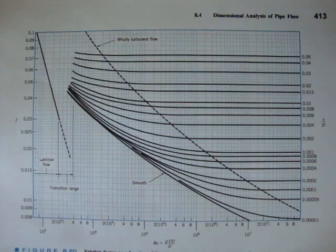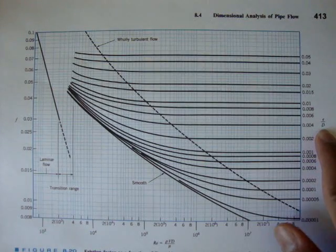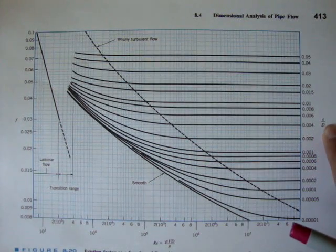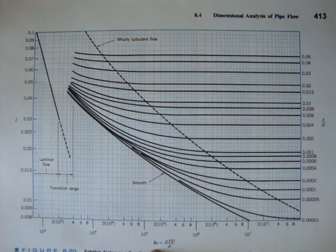And this Moody chart basically has three things. On the right, you can't see it, but it's our epsilon over d, which is our relative roughness. I talked about that in the last video. And here at the bottom, you have the Reynolds number.